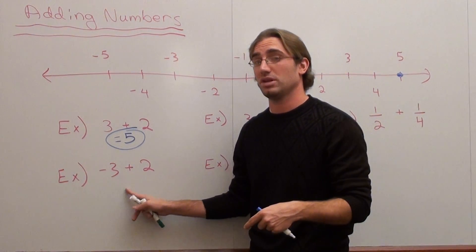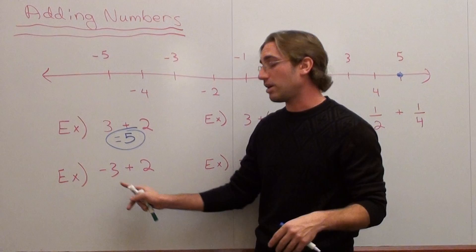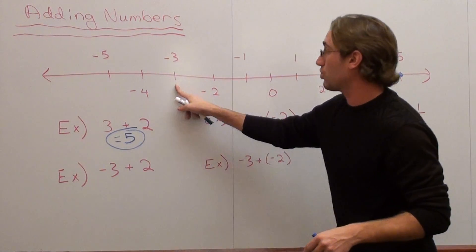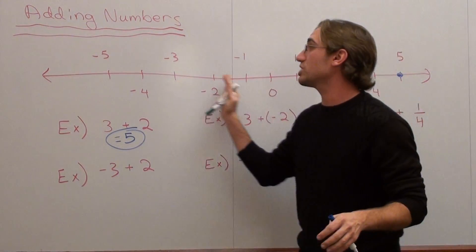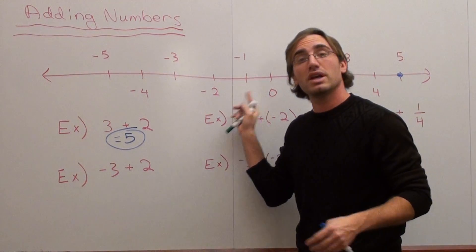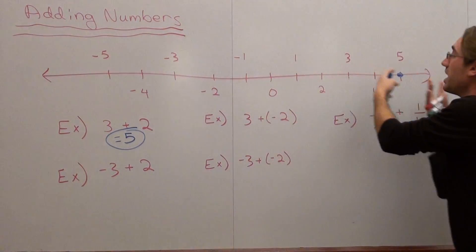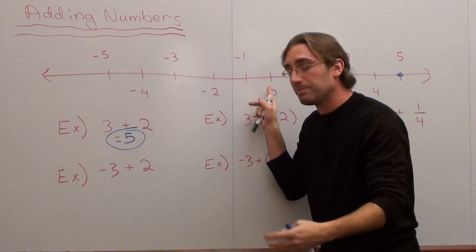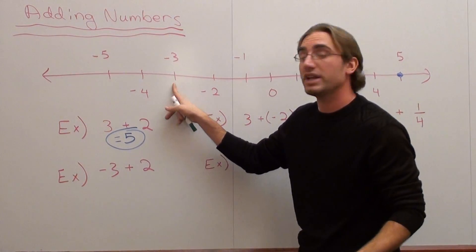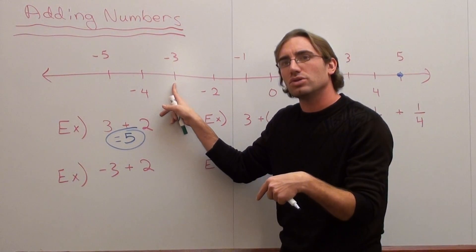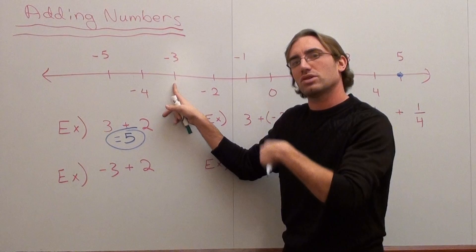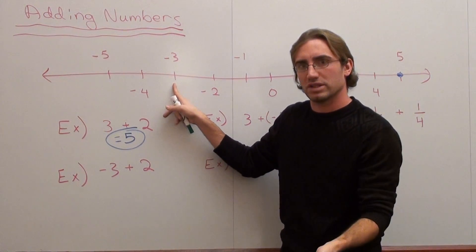The next example I want to use is negative 3 plus 2. In order to do this problem, you start at negative 3, which is right here. By the way, negative numbers are always to the left of 0 and positive numbers are always to the right of 0. So negative 3 starts right there, and if you're adding 2, well adding means you're going to the right, subtracting means you're going to the left.